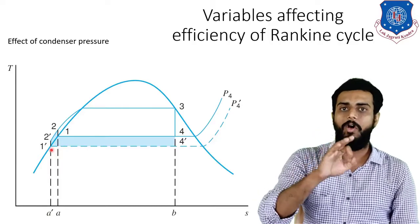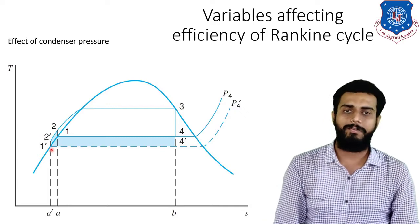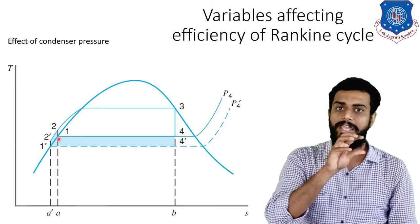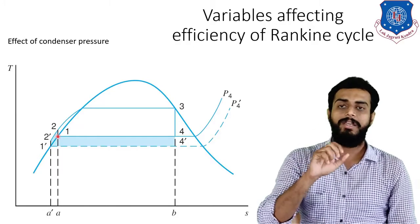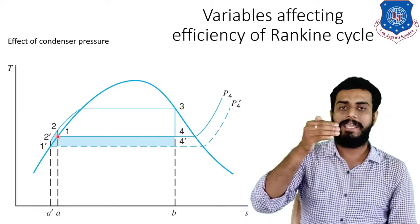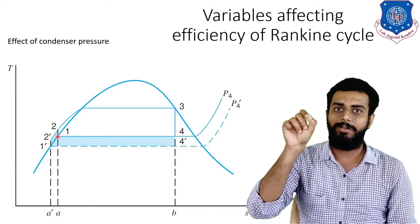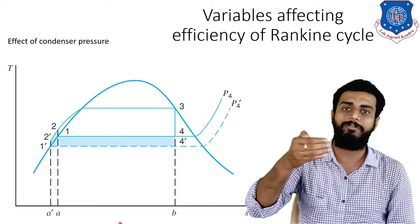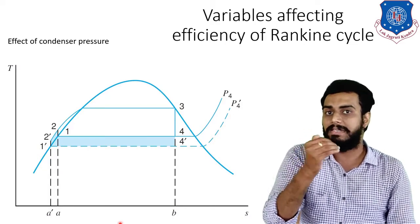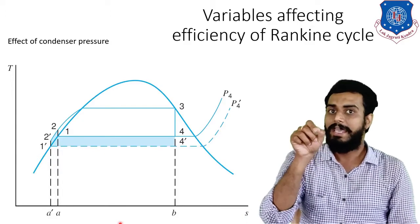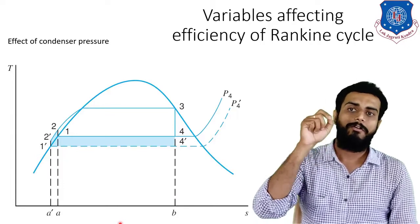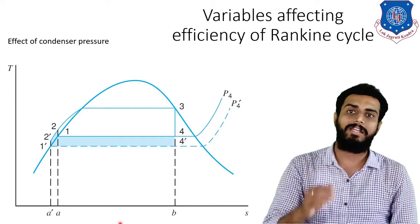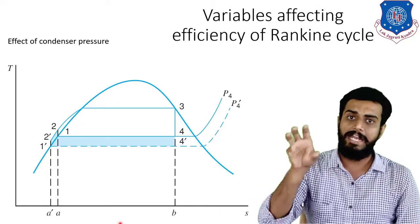Now let us understand the effect of decreasing the condenser pressure. Net work done is equal to the area enclosed by the cycle. In the original cycle, the net work done is identified by the area enclosed by the 1-2-3-4-1 cycle. In the modified cycle with decreased condenser pressure, the new area is enclosed by 1'-2'-3-4'-1'. As you can easily visualize in the diagram, if we decrease the condenser pressure, the net work done will increase.